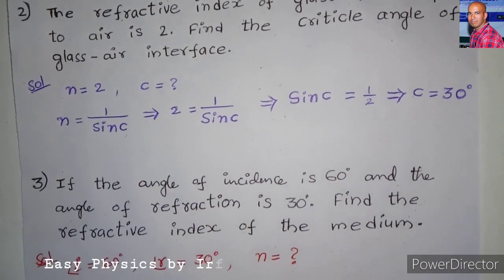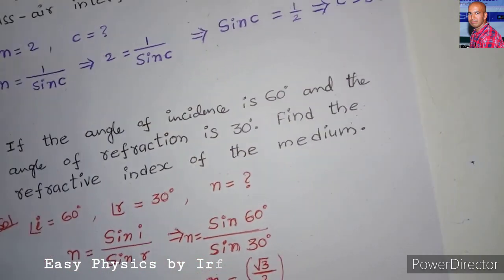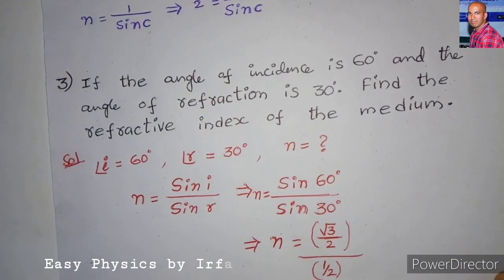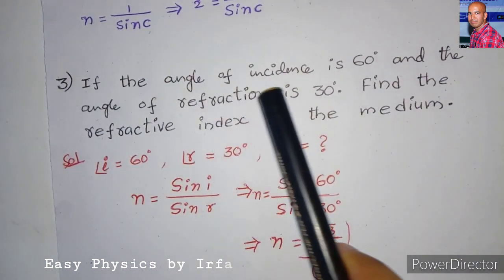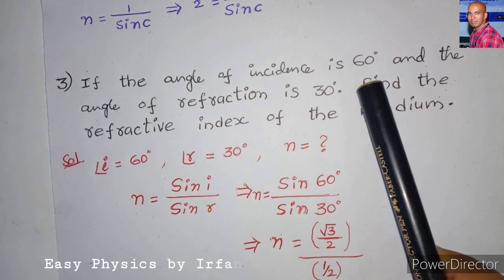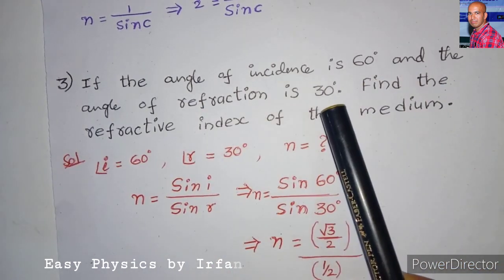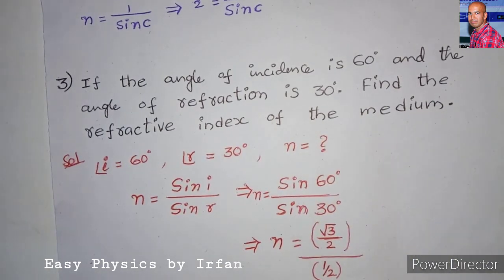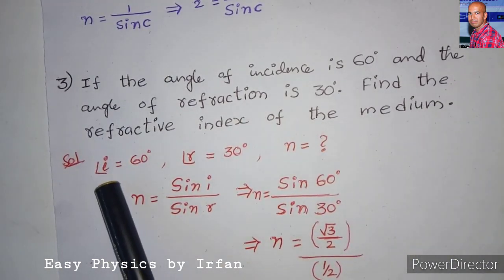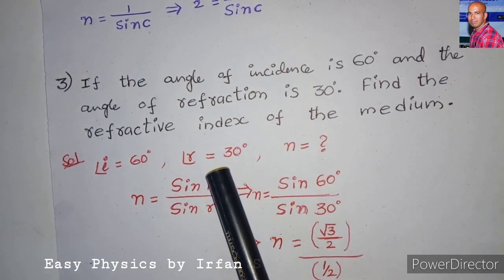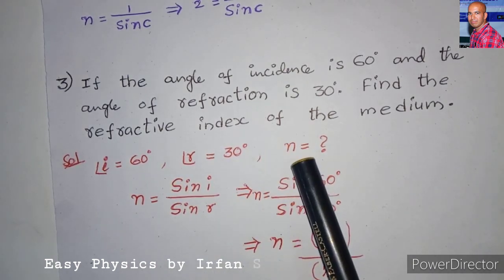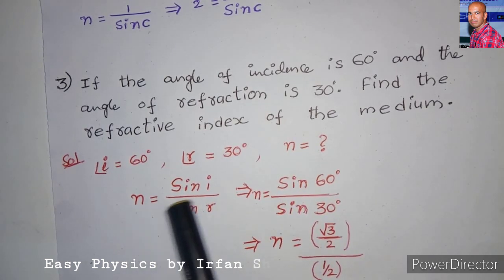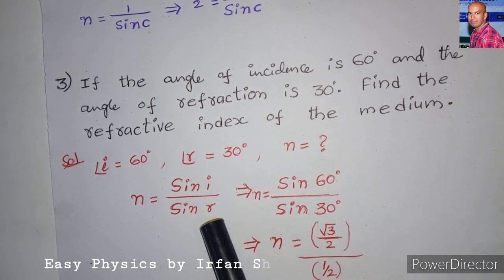Third problem: if the angle of incidence is 60 degrees and the angle of refraction is 30 degrees, find the refractive index of the medium. The angle of incidence is 60°, the angle of refraction is 30°, and we need to find refractive index n. The formula is Snell's law: n = sin i / sin r.